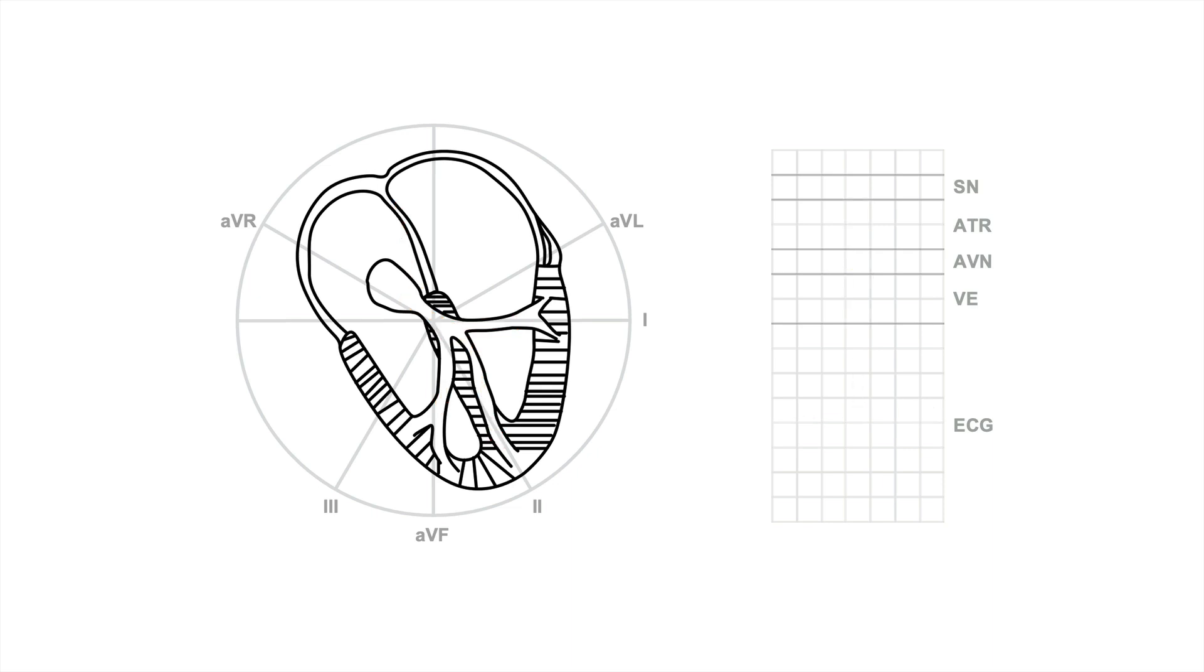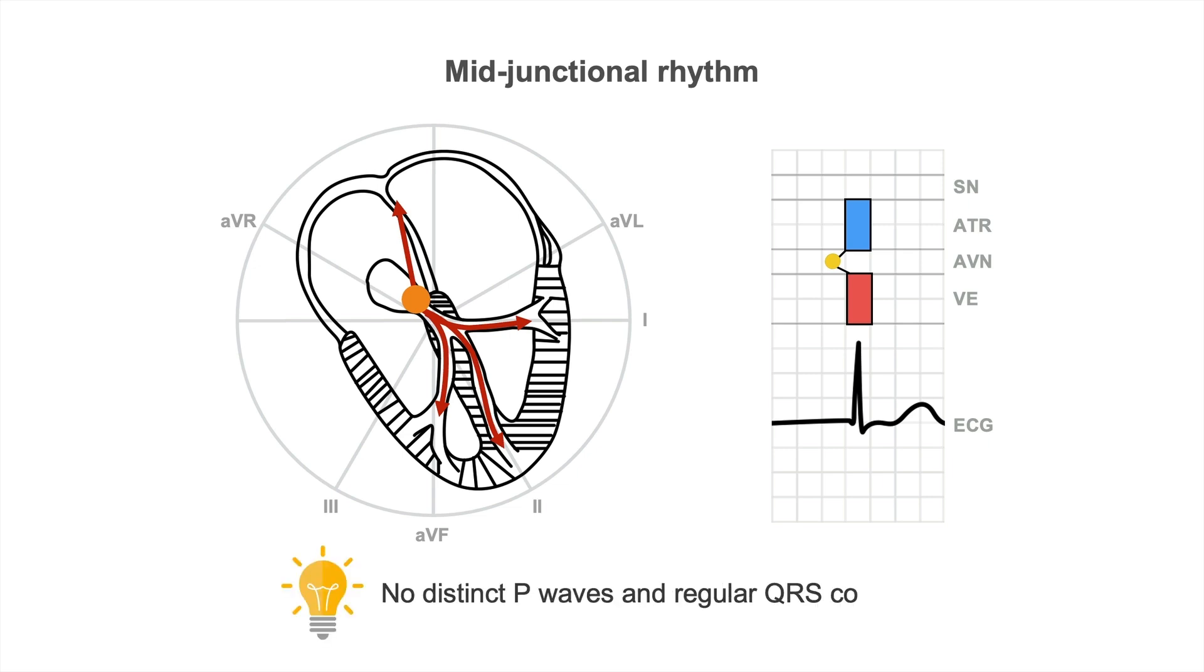Let's watch it again. So the impulse is generated in the AV junction and travels up and down simultaneously. And this is a so-called midjunctional rhythm. Remember that a rhythm that has no distinct P waves but with regular QRS complexes is usually a midjunctional rhythm. And why is it called midjunctional rhythm? Well, actually because it's thought that the impulse is generated somewhere in the mid-AV junction. So again, no distinct P waves and regular QRS complexes, usually in the setting of a regular heart rate.